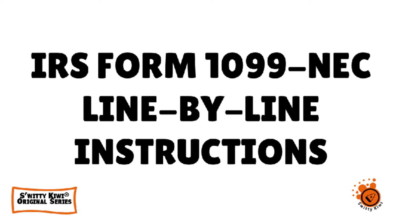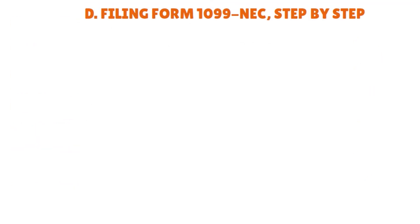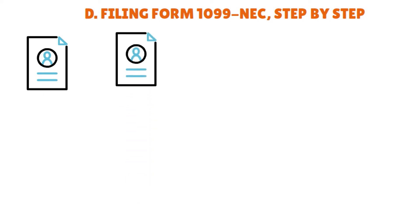Welcome back. We are continuing our journey through Form 1099-NEC line by line instructions. There are actually three copies of Form 1099-NEC: Copy A, Copy B, and Copy 1, which is sent to the local state department.